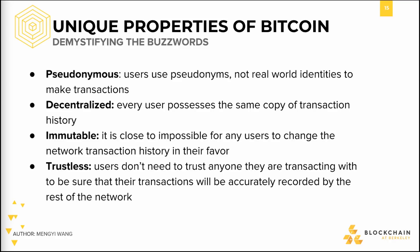Immutability, referring to the inability to change information, is another property of Bitcoin achieved through decentralization. Once all users in the Bitcoin network decide on the validity of some transaction, it is extremely difficult for anyone — including the users who made the transactions themselves — to undo their decisions. This feature helps foster trust among nodes on the network. If one wanted to alter the history of transactions, they would have to change every single user's local history simultaneously, which in the present day is close to 10,000 different users.